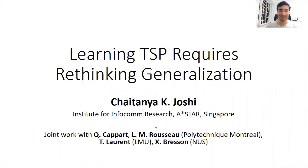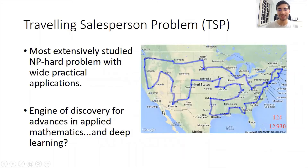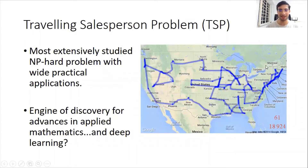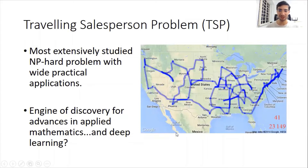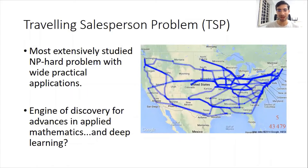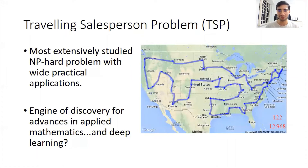Welcome to my talk titled 'Learning Traveling Salesman Problem Requires Rethinking Generalization.' TSP is probably the most extensively studied NP-hard problem and has really served as an engine of discovery in applied mathematics for years. Today, deep learning is being used to tackle TSP and combinatorial problems, and it's also becoming a benchmark to advance deep learning.